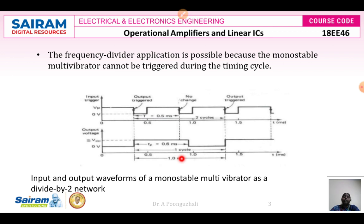A 555 timer can be used as a divide by 2 counter. Depending upon the width of the output pulse, I can decide whether I want divide by 2 or divide by 3. If I increase the time period of the monostable multivibrator output, I can have divide by 3. If the output is twice the trigger pulse period it is divide by 2; if it is thrice, it is divide by 3. This is how we construct the monostable multivibrator as a frequency divider circuit.